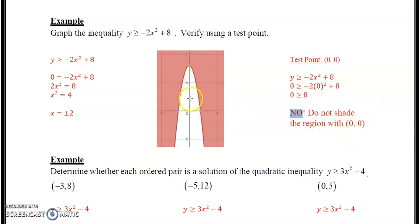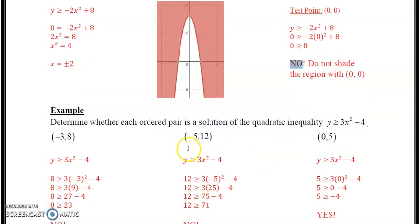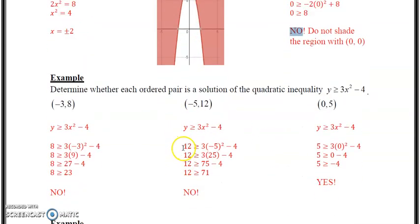If you get a yes, then you shade this region here. So in this example, this is just take each ordered pair and determine whether it's a solution or not. So if you plug it into your inequality and the inequality holds true, then it's a solution. If it doesn't, then it's no.